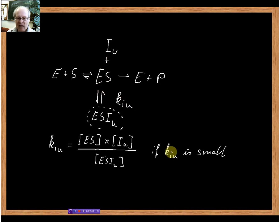If KiU is small, the inhibitor binds very strongly to the ES complex. That is what we want from a good inhibitor - the stronger the inhibitor binds, the better it is. In order to be a strong inhibitor, KiU must be very small.